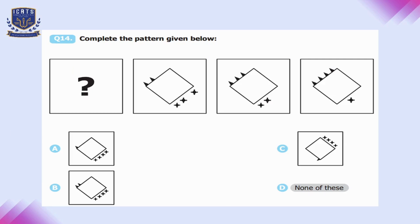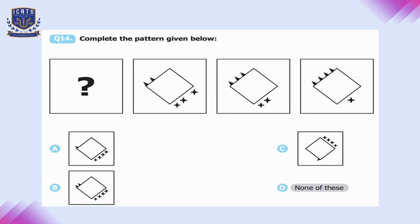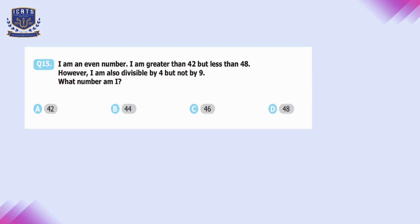Question number fourteen: complete the pattern. The number of spikes at the top of each square increases — two, three, four — so the first box should have one spike. The number of crosses decreases — three, two, one — so the first square should have four crosses. Option A is the correct representation.